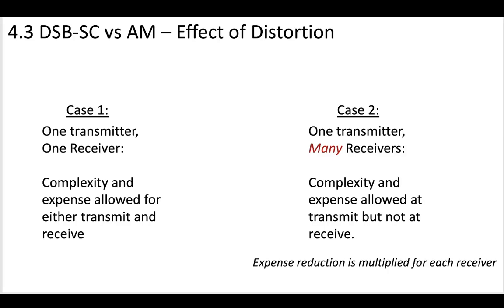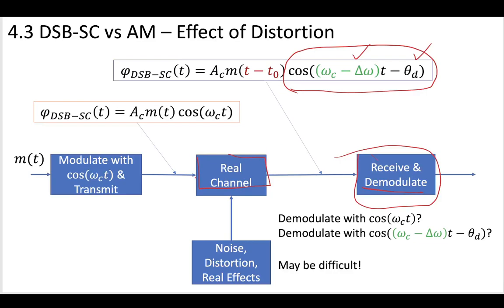So in the previous video, we determined that our first case, the first type of amplitude modulation we learned about, DSB-SC, we learned that this was going to be a little expensive, a little difficult, a little hard to do. Because our real channels are going to add a bunch of distortion. It's going to mess up this cosine wave. It's going to make it hard to apply this cosine wave to demodulate, and so you're going to get a bunch of errors.